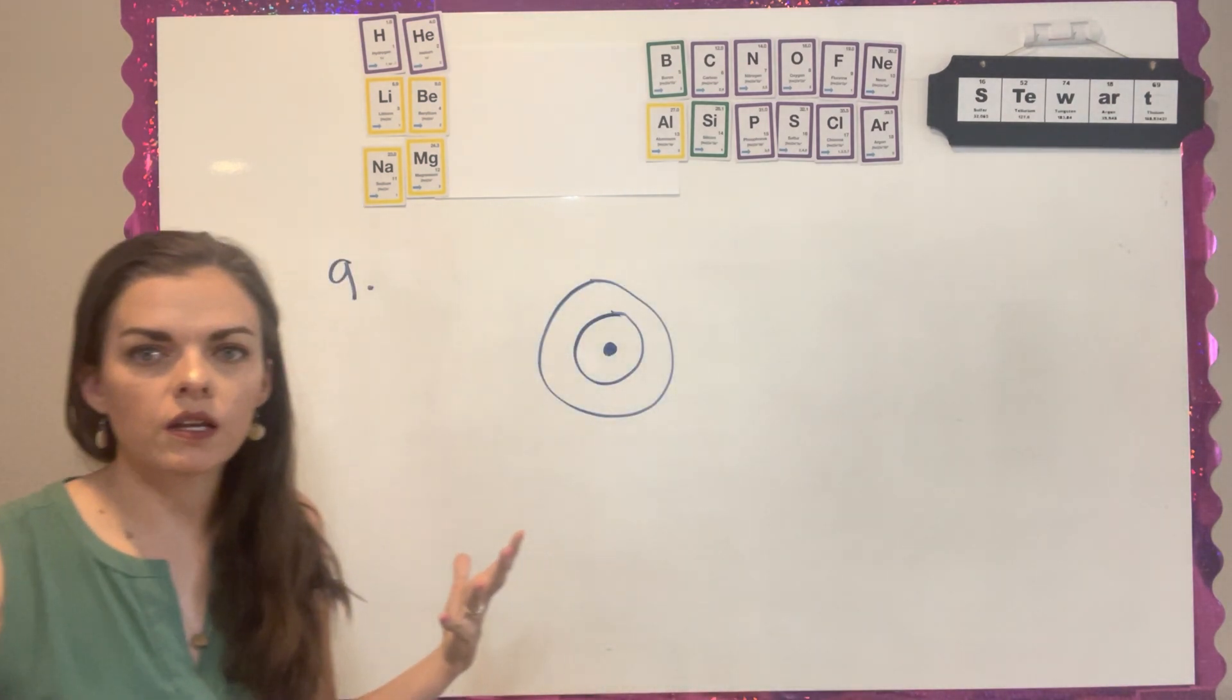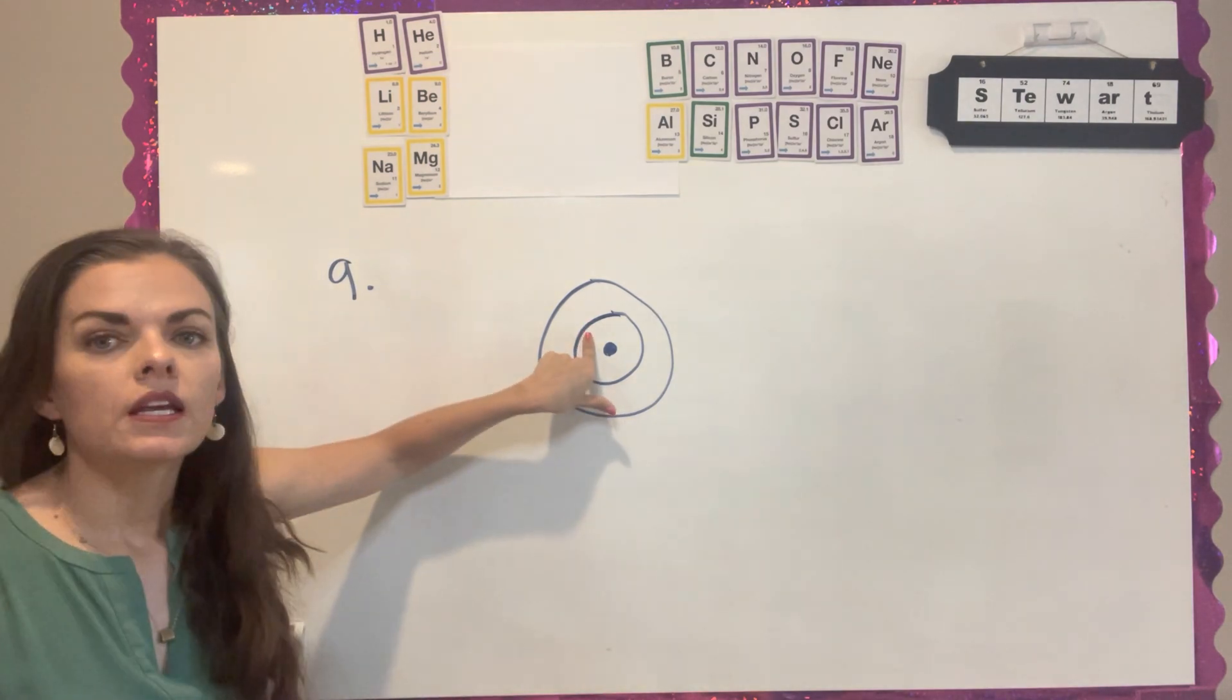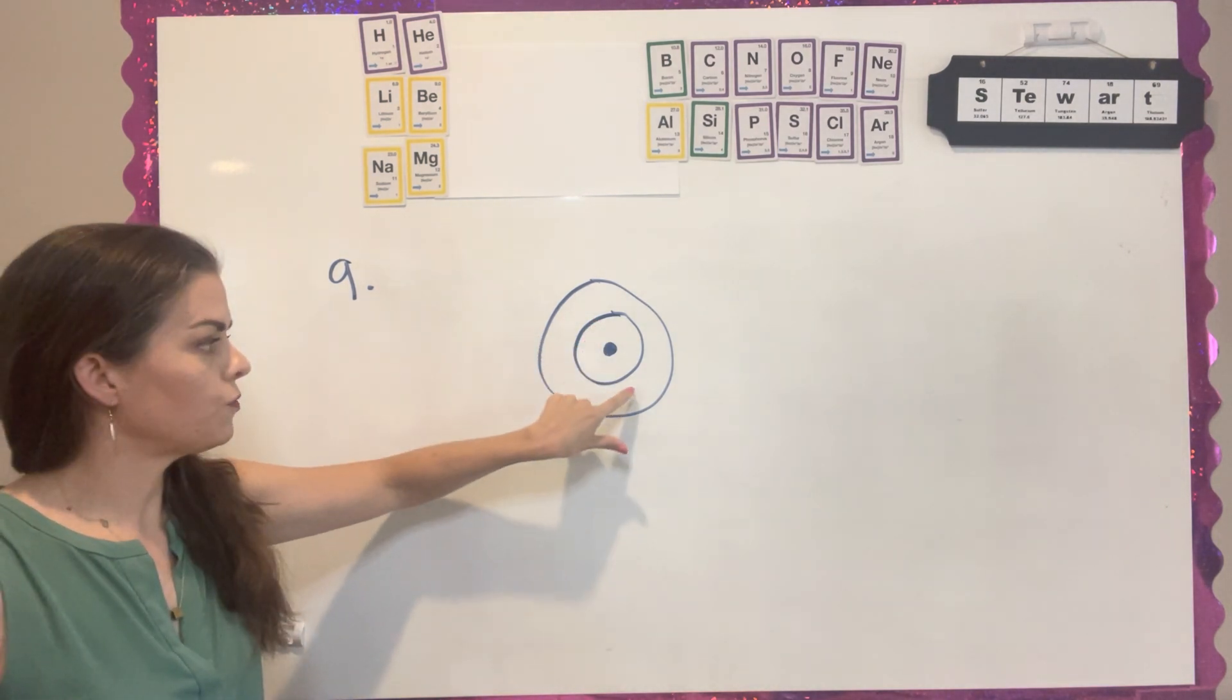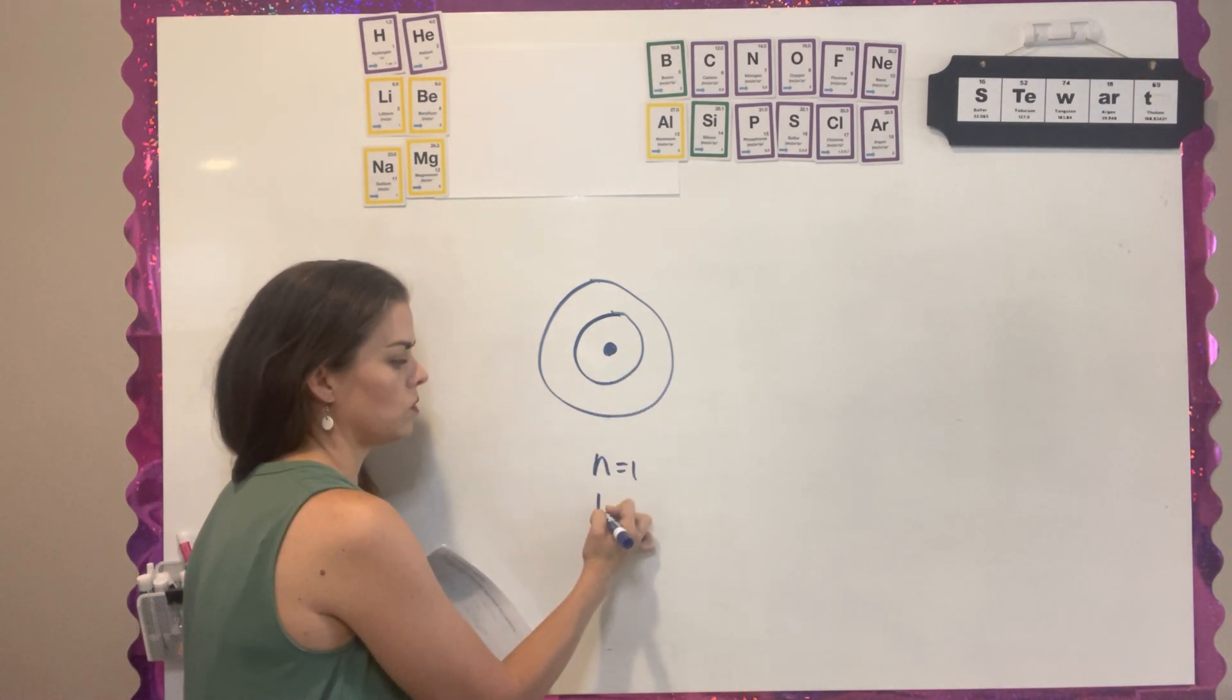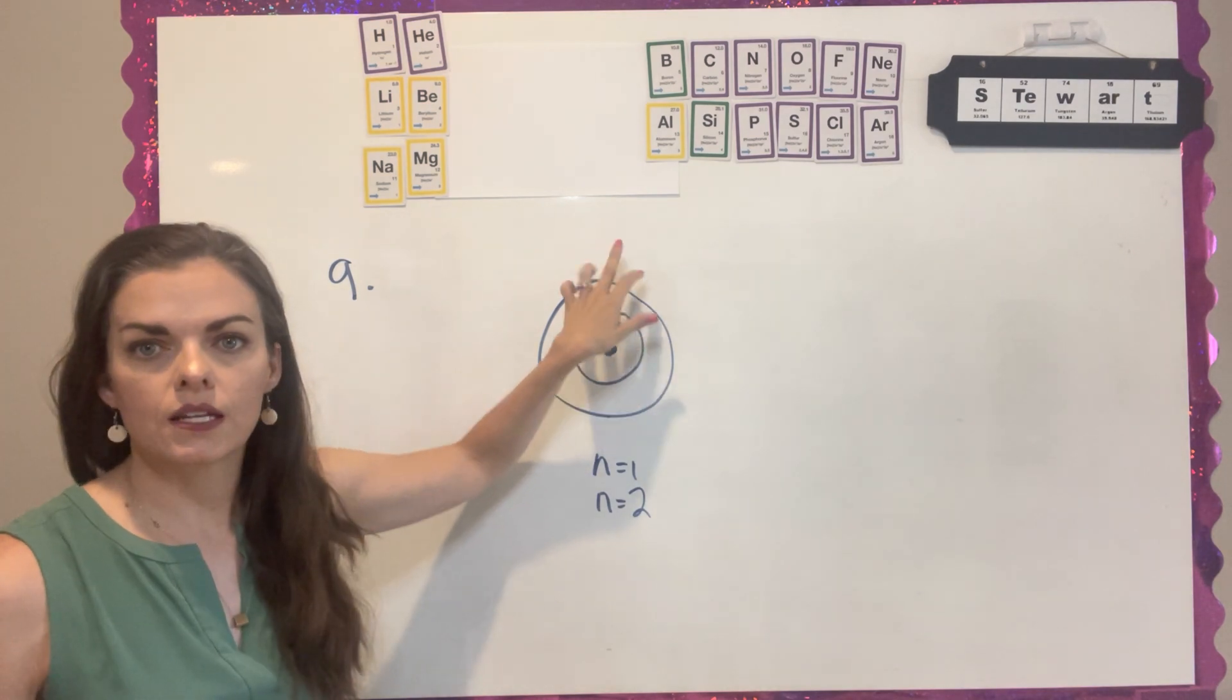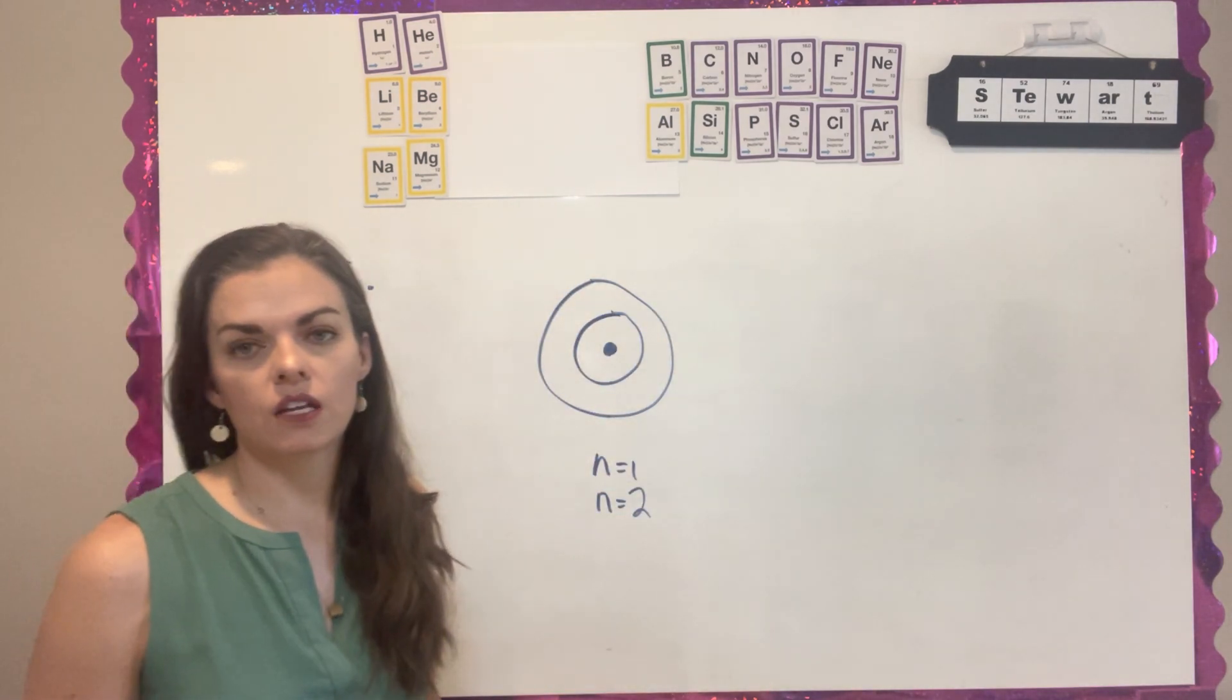For question number 9, we're going to go back to a really simple model of the planetary model of an atom. Like we talked about in the last chapter, electrons can be in different orbitals or energy levels. As it gets excited, it can jump up a level. This first energy level is n equals 1, and then the next one would be n equals 2. That's how we are noting energy levels. So if it's at 1 and it gets excited and it jumps up to 2, when it goes back down to 1, it's releasing that energy. And as it's releasing that energy, it's producing light.